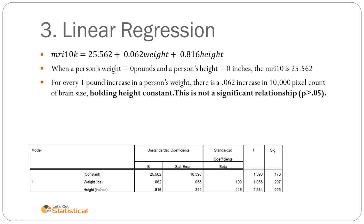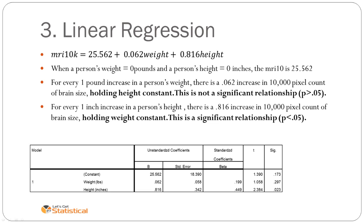Then we can interpret the gradient. So we can say for every one unit increase in the IV, there is a such and such increase in the DV. However, one thing you have to include in this sentence now is holding the other variable at a constant. So for every one inch increase in a person's height, there is a 0.816 increase in the pixel count and the brain size, holding weight constant.